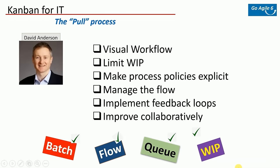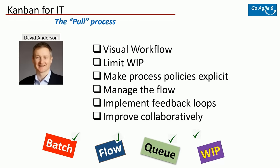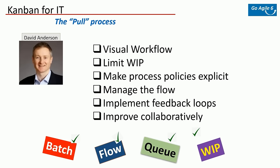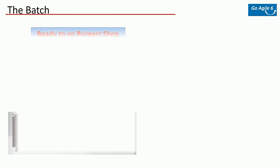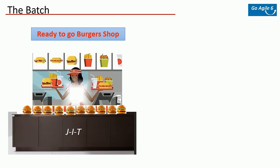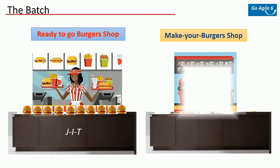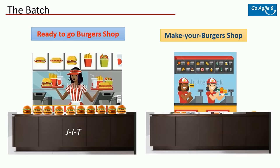A few things are becoming prominent in the system: batch size, flow, queue, and work in progress. Let's understand these principles with some examples. There are two burger shops — one is a ready-to-go burger shop and the other is a custom burger shop. In the ready-to-go shop, based on historic analysis they figured out which type of burger is most popular.